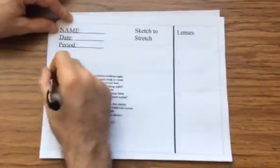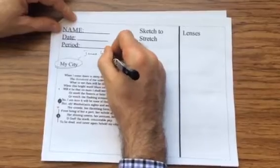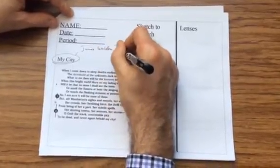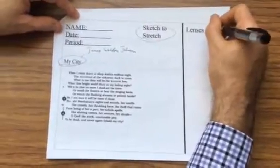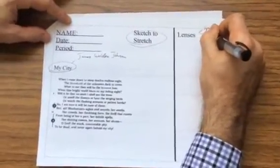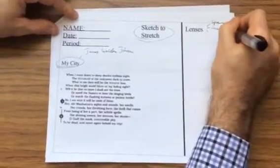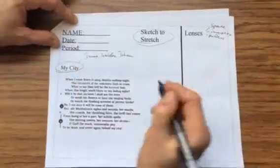The next poem we're going to do is My City by James Weldon Johnson. Now, we're going to kind of go out of order. Normally we do sketch to stretch first, and we do speaker, imagery, and patterns sometimes with this. We're going to start with patterns because this is a sonnet.